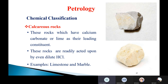The next type is calcareous rocks. These rocks have calcium carbonate — lime — as their leading constituent. They are readily acted upon by even dilute HCl. The main component of calcareous rocks is calcium carbonate, commonly called lime or 'sunnam'. These rocks are easily dissolved in water. Examples are limestone and marble.